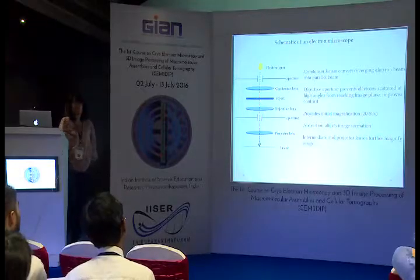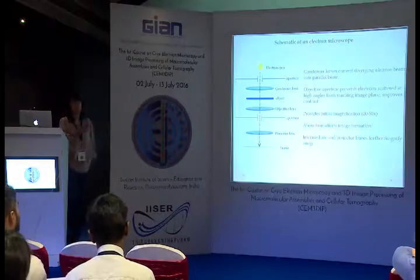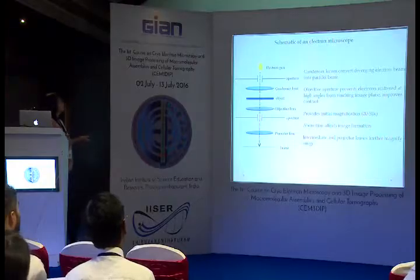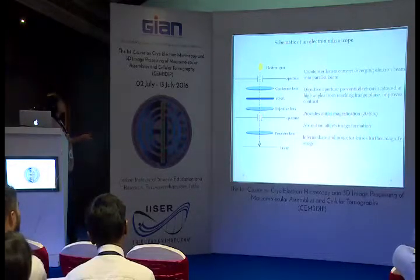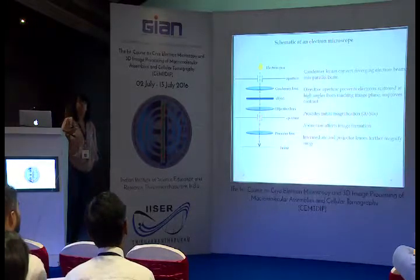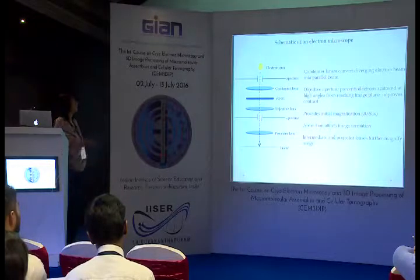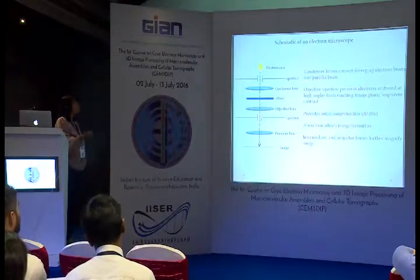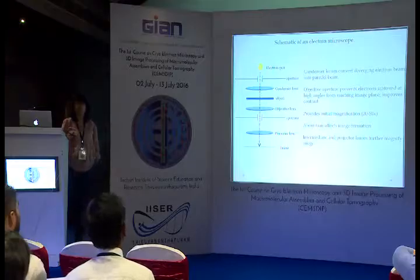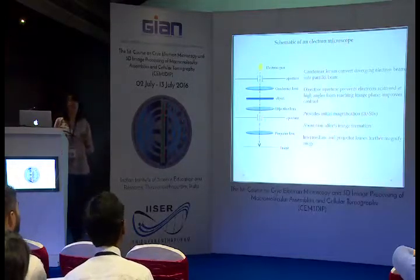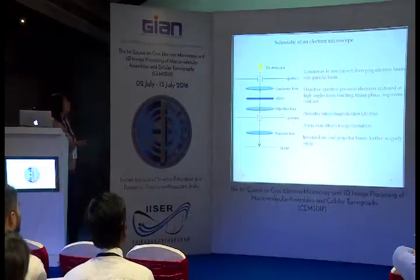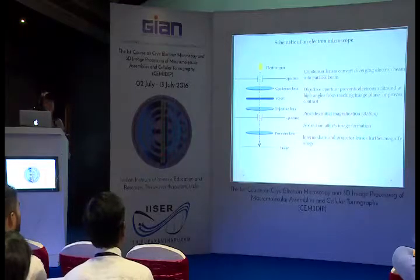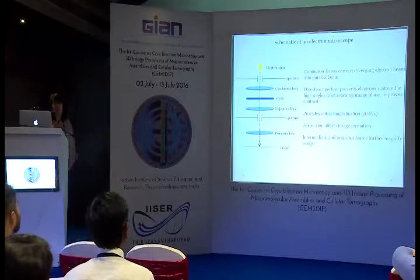After the beam interacts with biological objects, the scattered electrons undergo initial magnification by the objective lens. Apertures prevent highly scattered electrons from reaching the image plane and creating noise. A series of intermediate and projector lenses further magnify the image formed in the image plane. The detection system — whether film, CCD camera, or direct detector — determines how much information from the object is preserved.